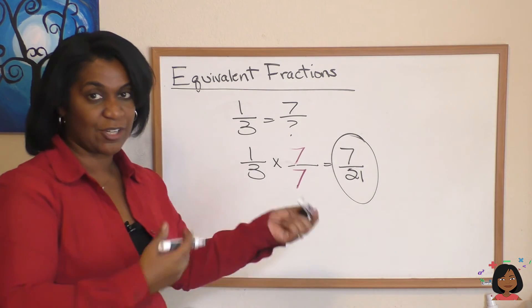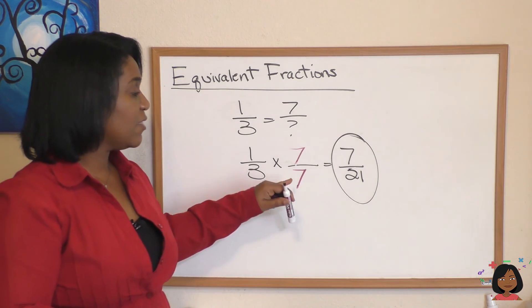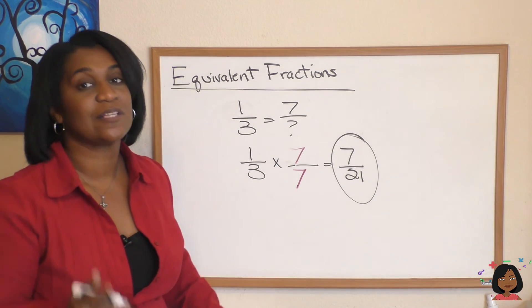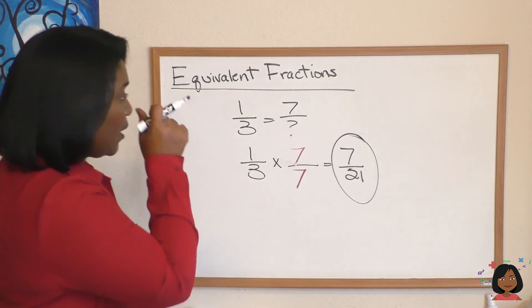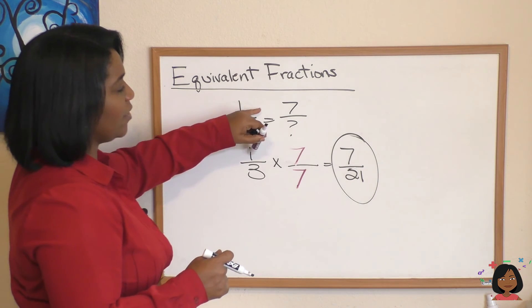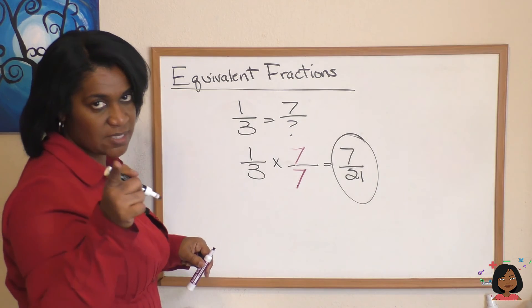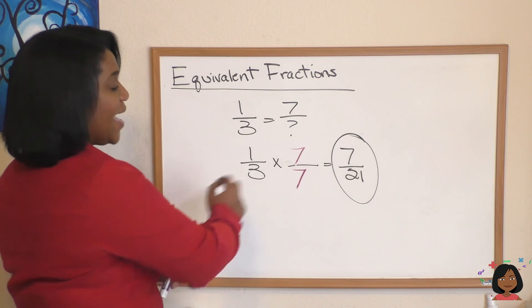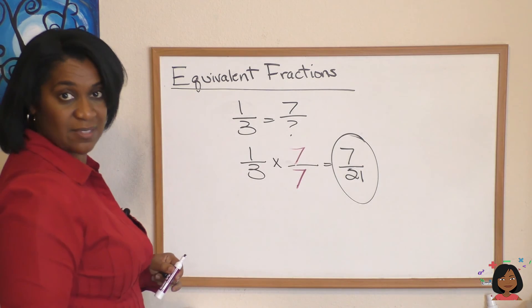And sometimes you don't even have to write it out like this. You could do mental math. Think about it. I could say one times what number is seven, and you would know, ah, seven. And what you do to the bottom, you got to do the top. So three times seven is 21. I could skip writing this whole thing down.